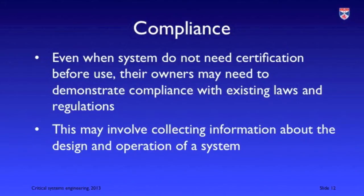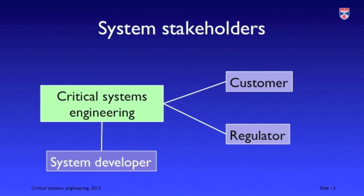Some systems don't need to be certified before they go into use, but the owners have an obligation to demonstrate compliance with laws and regulations, which often means much the same as getting a system certified. It's important to collect data about system development and operation and have that data available if required by the regulator. An important difference between critical systems engineering and other software engineering is that there's an additional key stakeholder — the regulator — who can both influence how development proceeds and has the ability to prevent a system from being deployed.